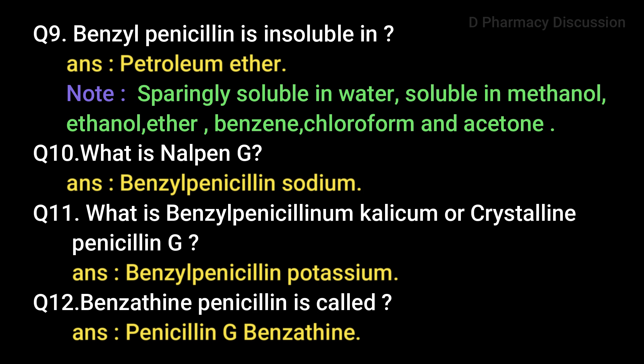Question 10: What is Napen G? Answer: benzyl penicillin sodium. Napen G is a brand name for benzyl penicillin sodium. Question 11: What is benzyl penicillin sodium, calcium, or crystalline penicillin G? Answer: benzyl penicillin potassium. Question 12: Benzethine penicillin is called penicillin G benzethine.